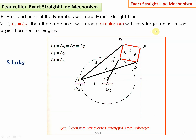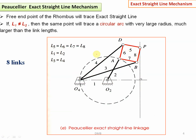If L1 is not equal to L2, then point P will trace a circular arc with a very large radius. For this mechanism to produce an exact straight line at the output, it must follow these geometrical constraints: length of link 1 must equal length of link 2, so distance O2–O4 must equal L1 equals L2. Length of link 3 must equal length of link 4, so L3 equals L4. And the lengths of the remaining four links — link numbers 5, 6, 7, and 8 — must all be the same. Only under these conditions will point P move along an exact straight line.